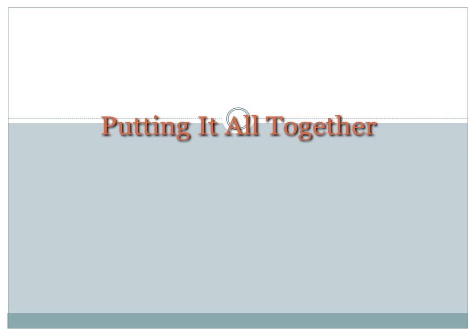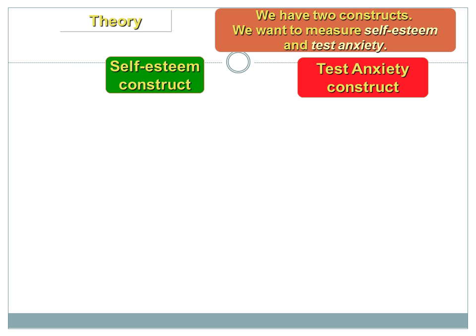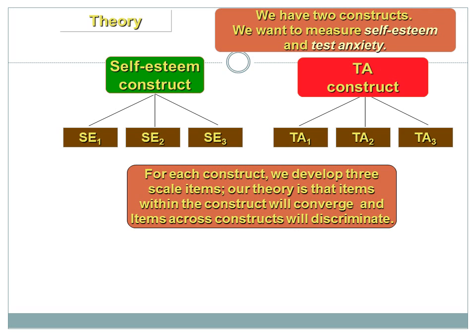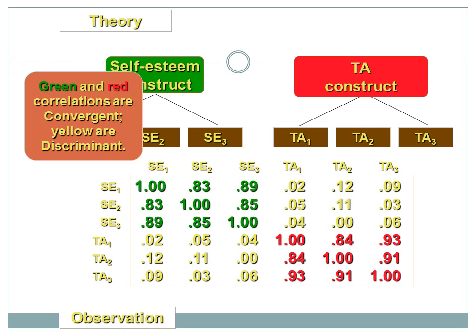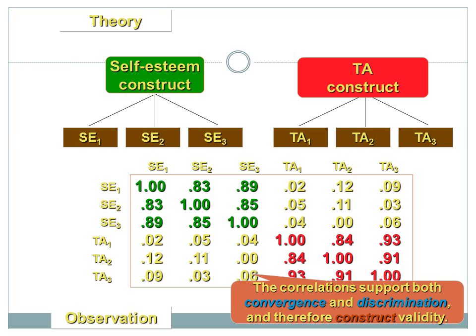Generally, when we put convergent and discriminant validity together, we place them in what is called a multi-trait multi-method matrix. We take three items from self-esteem and three items from test anxiety and put them all together in one matrix. The upper left section in green shows the correlations among self-esteem items, and the bottom right in red shows the correlations among test anxiety items — both demonstrating high convergence. The cross-correlations between self-esteem and test anxiety items show low values, demonstrating divergence and confirming both convergent and discriminant validity.